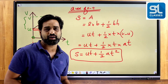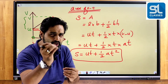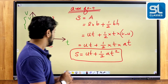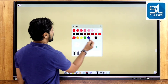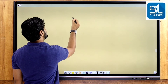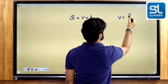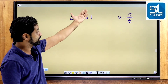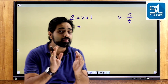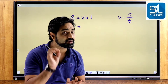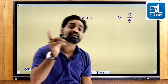About the velocity-time graph analysis of slope and area: first, V equals U plus AT, and S equals UT plus half AT squared. Now the third equation. Displacement is equal to velocity into time. Velocity equals displacement by time, so S equals V into T. Now in accelerated motion, V is the average velocity.